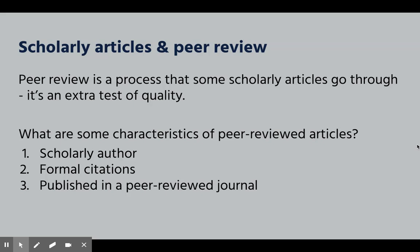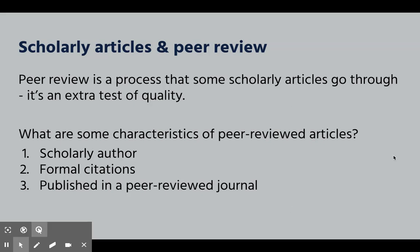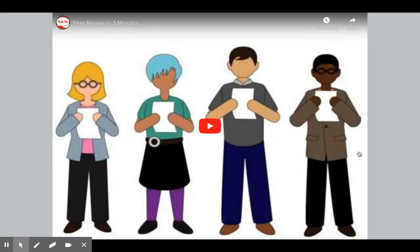Peer review: you watched a video on peer review as part of the module, but just to review — it's a process that some scholarly articles go through, like an extra test of quality. Peer-reviewed articles have three main characteristics: they were written by a scholarly author, they have formal citations, and they're usually published in a peer-reviewed journal. There's a video about three minutes long that explains the peer-review process — I'd encourage you to check it out if you've forgotten.